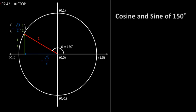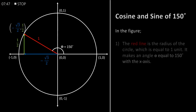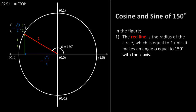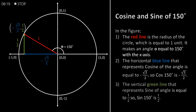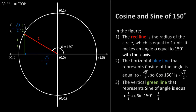Cosine and sine of 150 degrees. In the figure, the red line is the radius of the circle which is equal to 1 unit. It makes an angle theta equal to 150 degrees with the x-axis. The horizontal blue line that represents cosine of the angle is equal to minus square root of 3 by 2, so cos of 150 degrees is equal to minus square root of 3 by 2. The vertical green line that represents sine of the angle is equal to 1 by 2, so sin of 150 degrees is equal to 1 by 2.